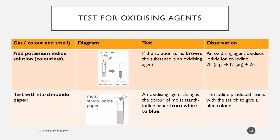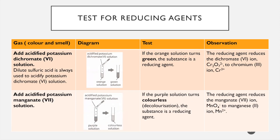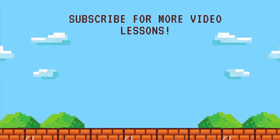For oxidizing agents - sometimes they put this together in a question. Use KI: if it changes to brown color, there's an oxidizing agent present. Oxidizing agents include oxygen, potassium dichromate, potassium manganate(VII), and hydrogen peroxide. For potassium dichromate it's orange to green; for potassium manganate it's purple to colorless.